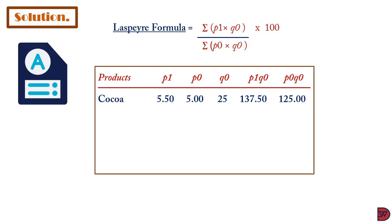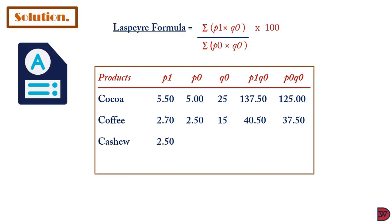Multiplying the base price by the base quantity gives $125.00. For coffee, the selected price is $2.70, base price is $2.50, and base quantity is 15. The selected price multiplied by the base quantity gives $40.50; the base price multiplied by the base quantity gives $37.50. For cashew, selected price is $2.50, base price is $1.00, and base quantity is 20. The selected price times base quantity gives $50.00.